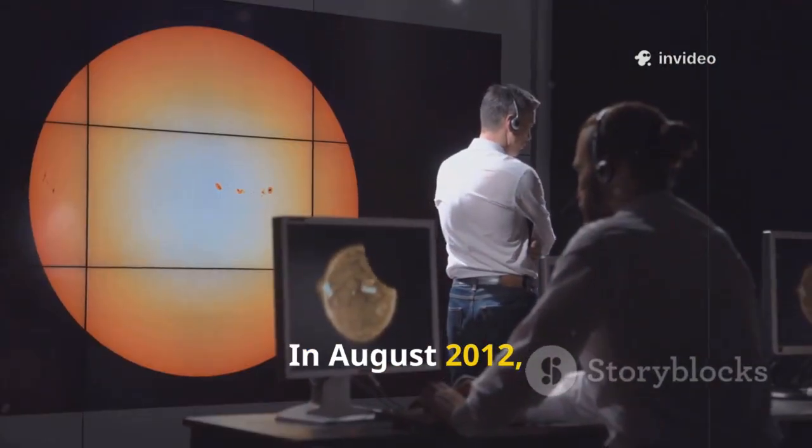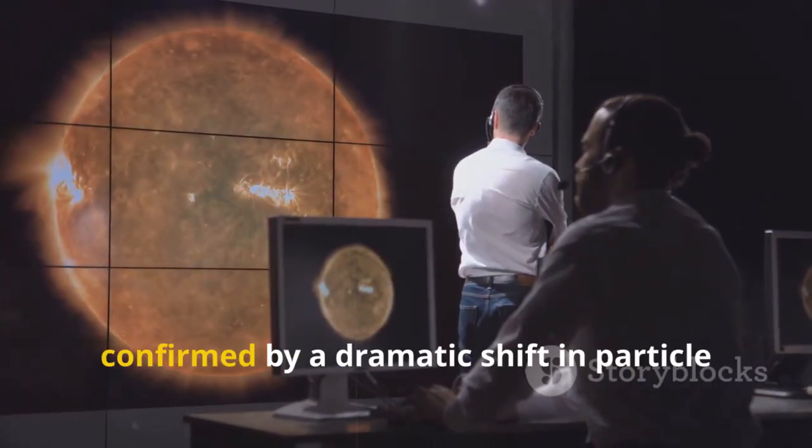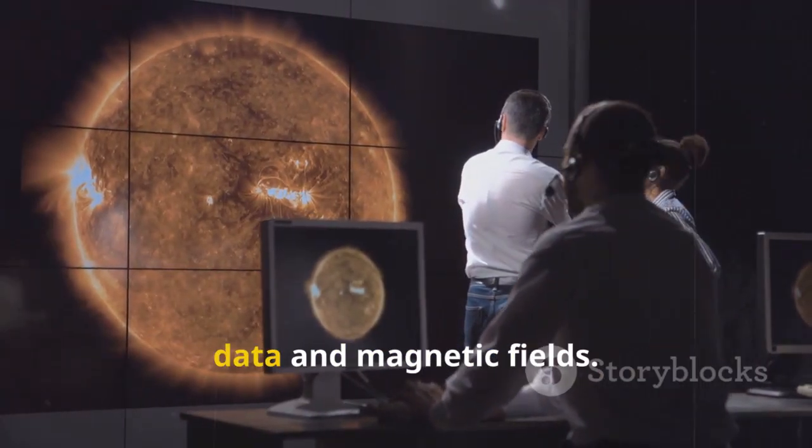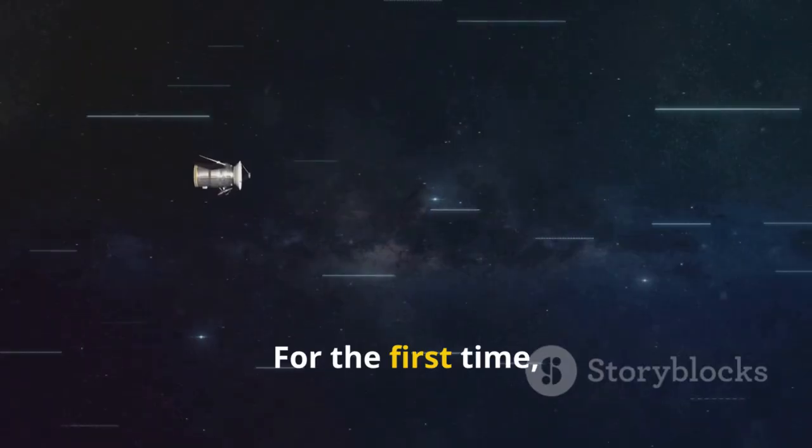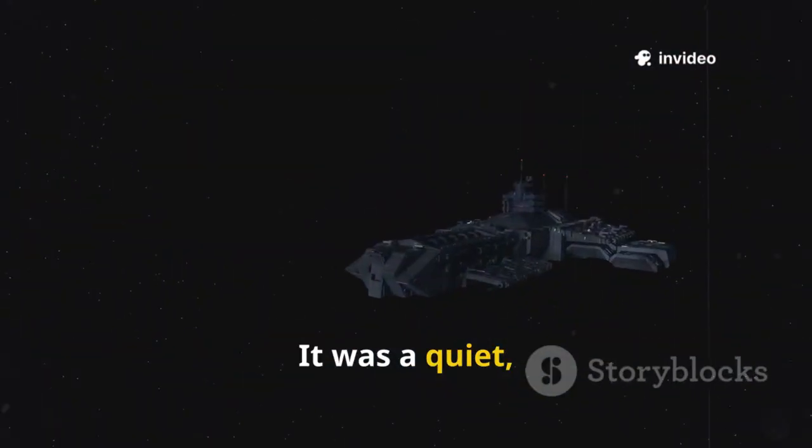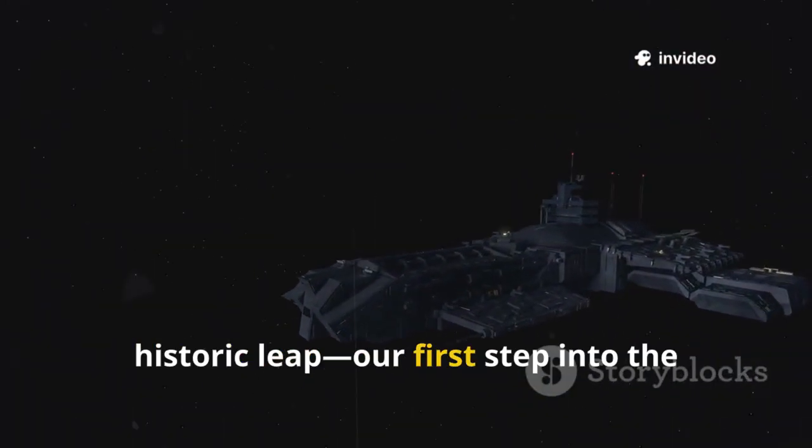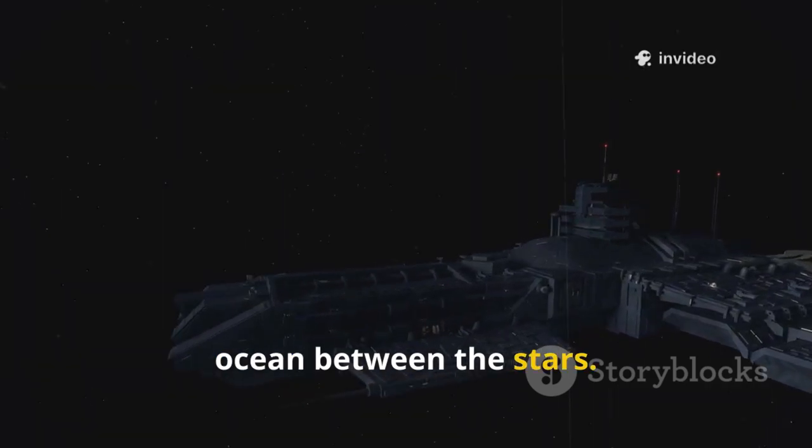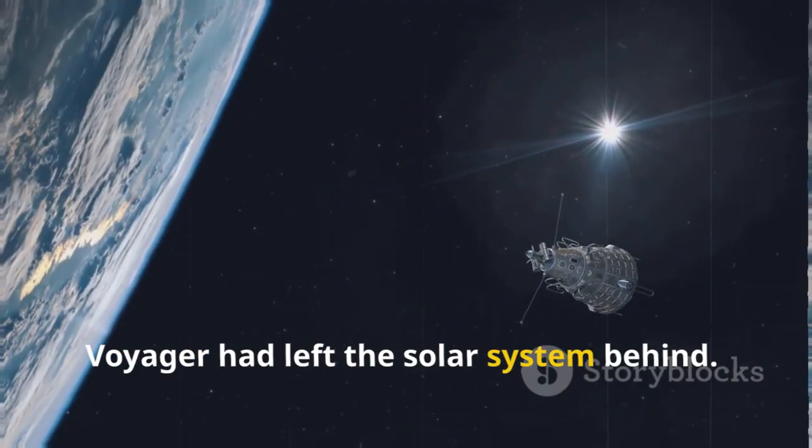In August 2012, Voyager 1 crossed this line, confirmed by a dramatic shift in particle data and magnetic fields. For the first time, a human-made object entered interstellar space. It was a quiet, historic leap, our first step into the ocean between the stars. Voyager had left the solar system behind.